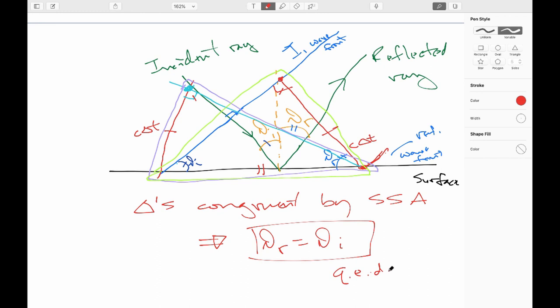So that means that this angle here is congruent to that angle there. But this is theta incident, and that's theta reflected. So therefore, the angle of reflection equals the angle of incidence. And that completes the proof.